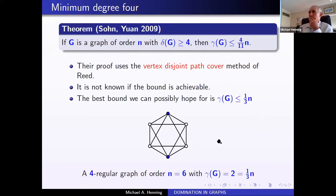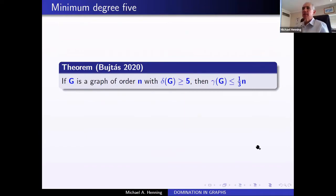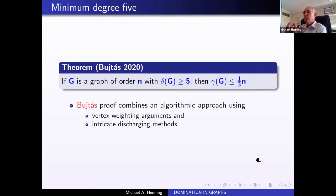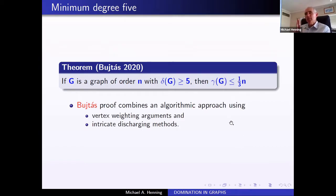For minimum degree four, Chinese researchers (Sun and others) proved a four-elevenths bound using Reed's proof technique. For minimum degree five, the big breakthrough came from Shida Bujtás, a Hungarian mathematician, who proved the magical one-third bound. Her proof no longer uses Reed's vertex-disjoint path-cover technique; instead she used an ingenious approach combining vertex-weighting arguments, a coloring approach, and algorithmic discharging arguments — a completely different and powerful technique.